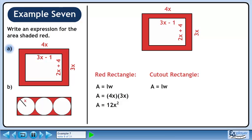The area of the cutout rectangle is A equals length times width. Plug in 3x minus 1 for the length and 2x plus 4 for the width. Foil to get 6x² plus 12x minus 2x minus 4. Collect the x terms to get 6x² plus 10x minus 4.